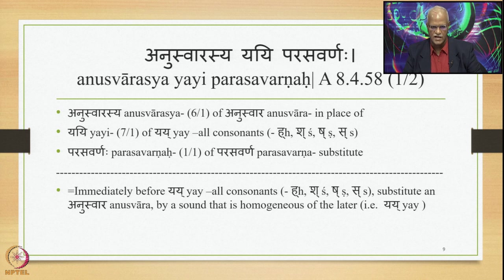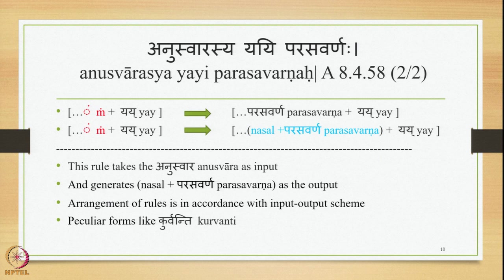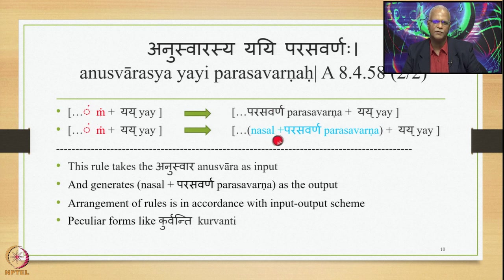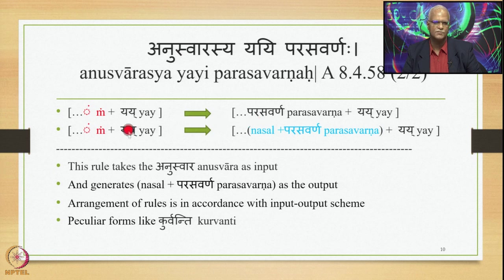So if you have an Anuswara followed by Yai, the Anuswara is substituted by the nasal Parasavarana of that Yai. The rule is: Anuswara plus Yai is the input, 8.4.58 applies, and the output is nasal Parasavarana plus Yai.